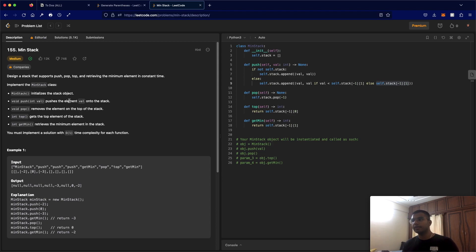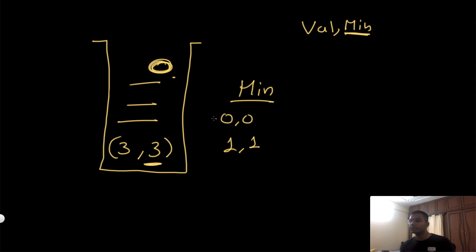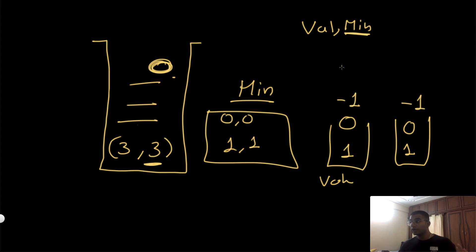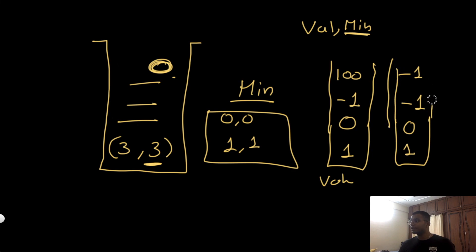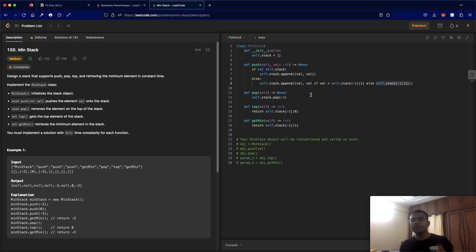You can also use a slightly different approach with two separate stacks. One stack stores the values and a second stack tracks the minimum. When you add minus one, the value stack gets minus one and the min stack also gets minus one. When you add one hundred, the value stack gets one hundred but the min stack keeps minus one. Whenever you pop from the value stack, you also pop from the min stack. It's the same idea, just with two stacks instead of storing pairs — and they both take up the same amount of space.